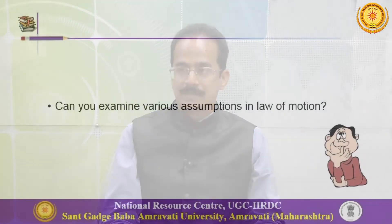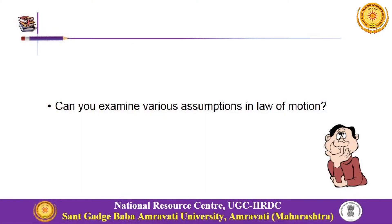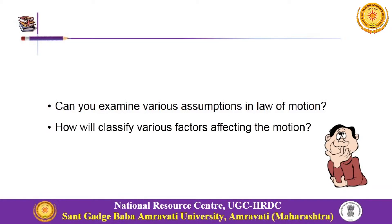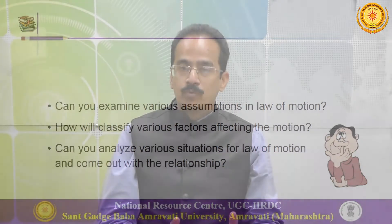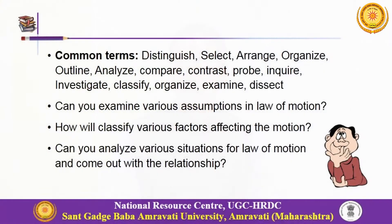After the application level, the higher level of thinking starts with analysis. Analysis about the third law of motion may involve our learners' ability to examine the various assumptions in the law of motion, classify the various factors affecting motion, and analyze various situations to identify relationships. These questions require seeing the interconnections among different components of the information. We use cognitive action verbs like distinguishing, select, arrange, organize, outline, analyze, compare, classify, examine, and dissect.